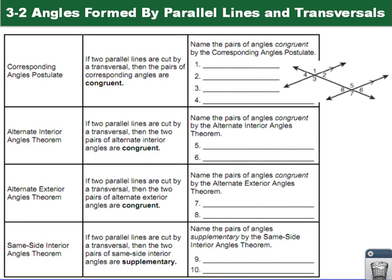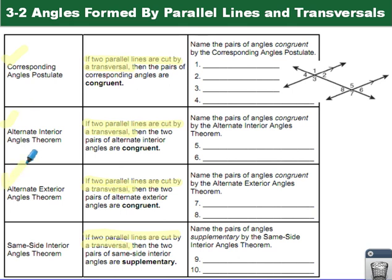We have a postulate and three theorems to talk about today. Notice that the given in all four is the same: if two parallel lines are cut by a transversal. That's when to use these theorems. Then, this is where it differs. The corresponding angles postulate tells us the pair of corresponding angles are congruent. The alternate interior angles theorem says they're also congruent. Same with the alternate exterior angles theorem — they're also congruent.